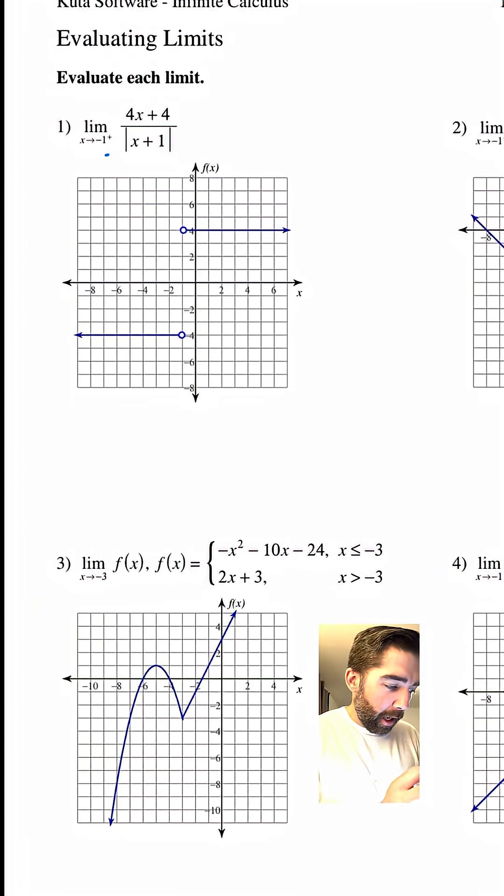Jump discontinuities. Here it is. You got to see where it's approaching from. So this reads the limit of the function, right? As x approaches negative 1 from the positive side. So here we go from the positive side. We are approaching from this side from the right. What is happening? Where is this going?